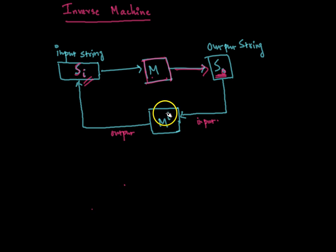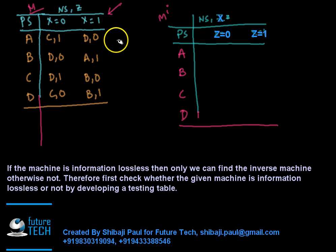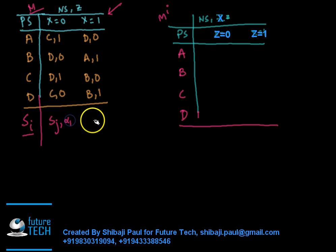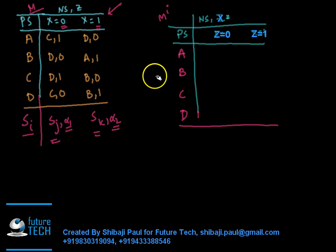So mi is the inverse machine of m. Now how to find out the inverse machine of any given machine — that we are going to see in this tutorial. This is the given machine m and we need to find out the inverse machine. The general case is: for any state of m, if the output is 0 or some value, we represent the transition as going to state sj for input 0 producing output alpha 1, and going to sk producing output alpha 2. For input 0 it transits from si to sj, and for input 1 it goes to sk from si. We represent these things tabularly.